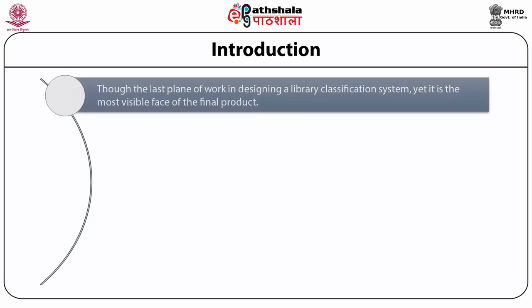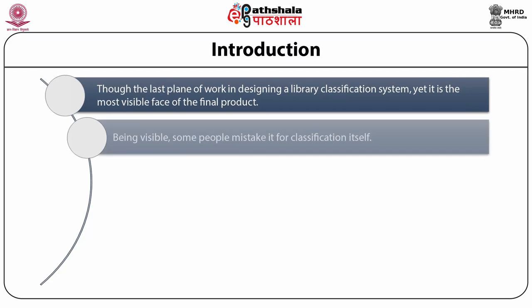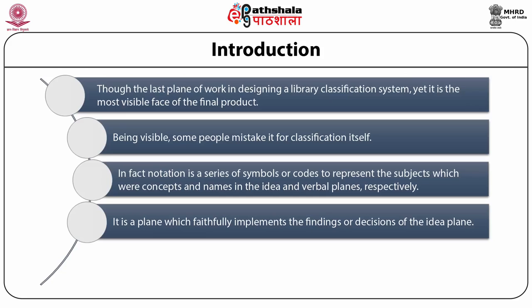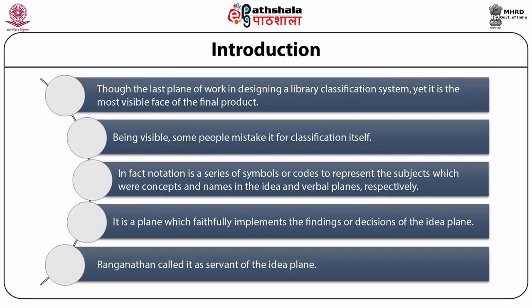The notational plane, though the last plane of work in designing a library classification system, is the most visible phase of the final product of library classification schedules. Being visible, some people mistake it for the classification itself. Notation can be defined as a series of symbols or codes to represent subjects and their parts — which were concepts and names in the idea and verbal planes respectively. It is a plane which faithfully implements the findings or decisions of the idea plane and the verbal plane. Ranganathan called it a servant of the idea plane.